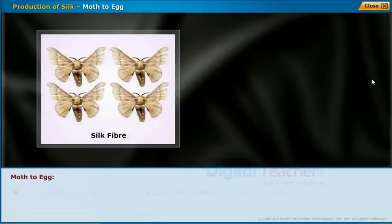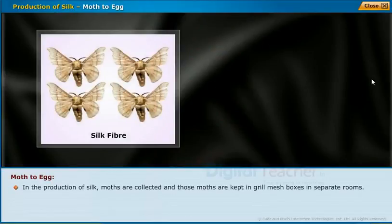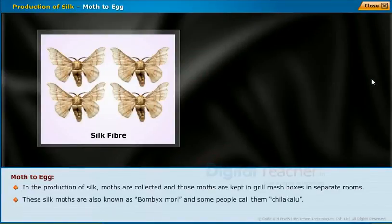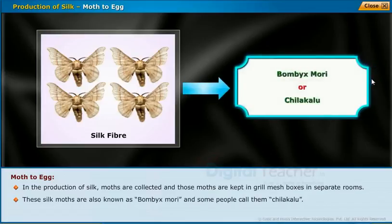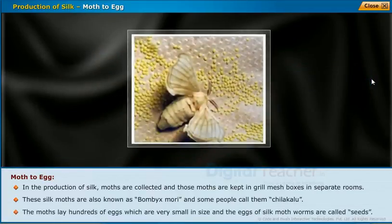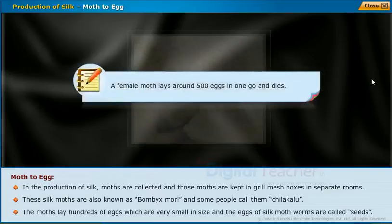In the production of silk, moths are collected and kept in grill mesh boxes in separate rooms. These silk moths are also known as Bombyx mori, and some people call them chilakalu. The moths lay hundreds of eggs which are very small in size. The eggs of silk moth worms are called seeds. A female moth lays around 500 eggs in one go and then dies.